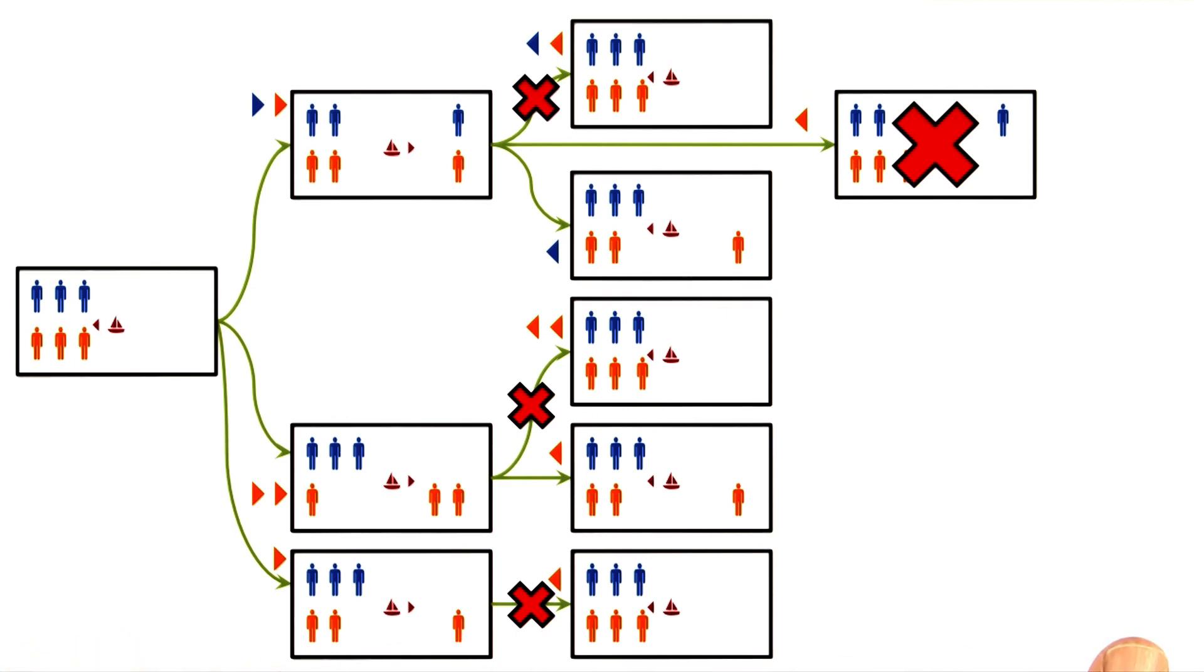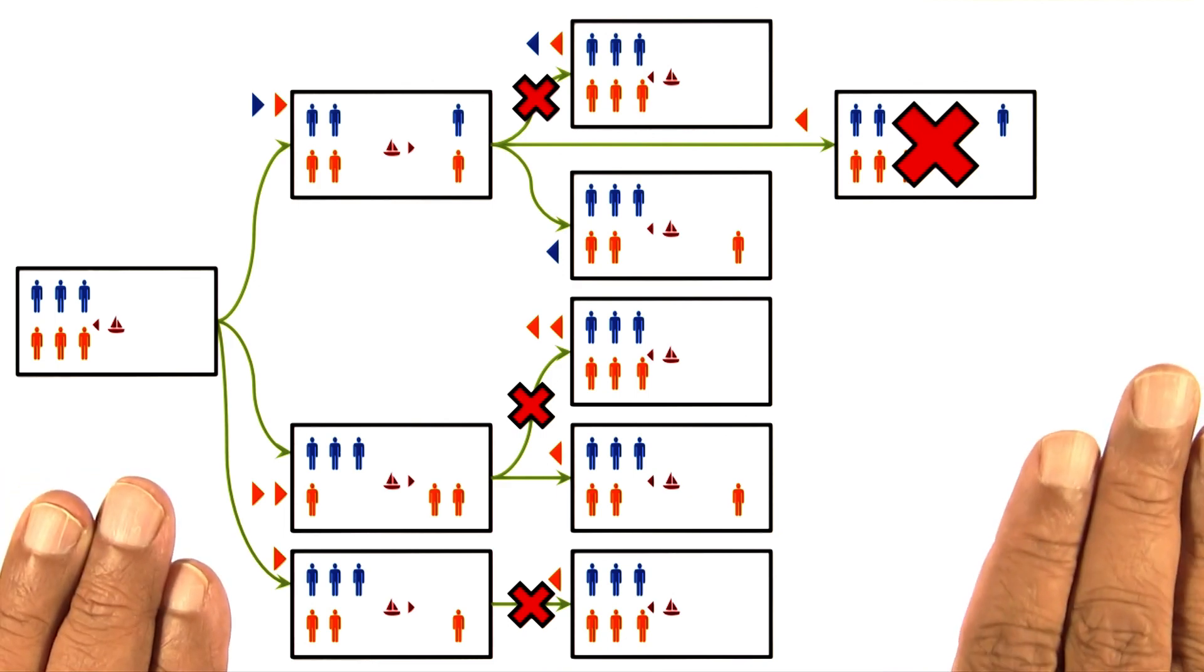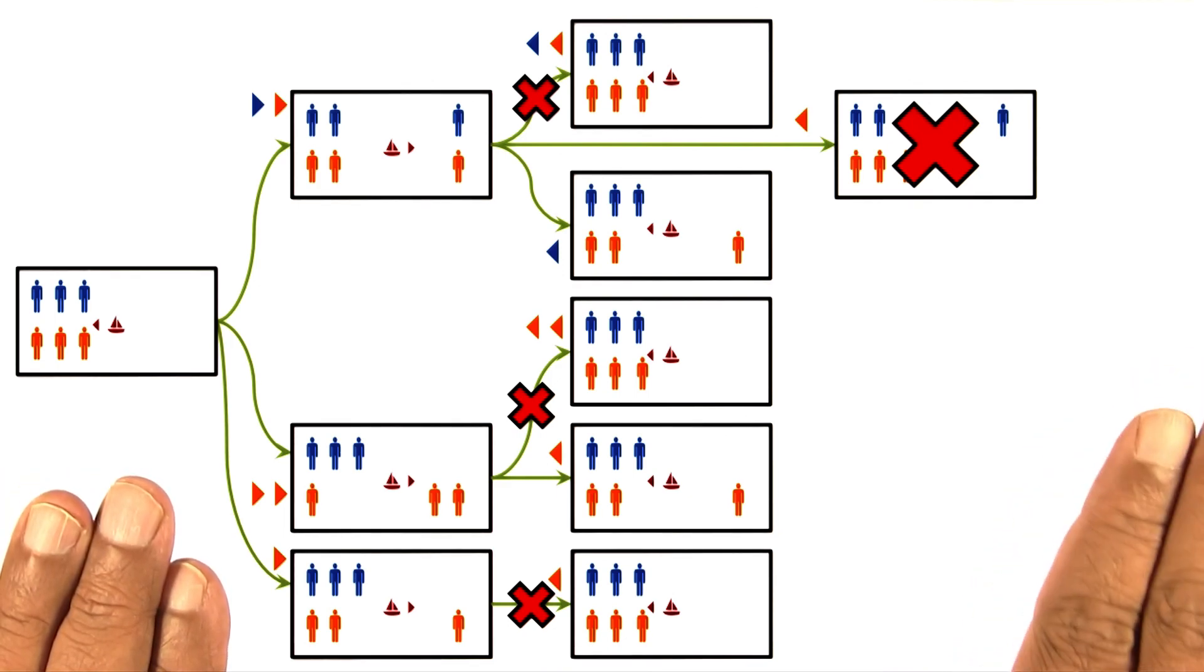For this problem, for this relatively simple and small problem, the balance of responsibility between the generator and tester might look like a trivial issue. But imagine a problem in which there were a million such states. Then whether we have the generator very smart, or the tester very smart, or both, can become an important issue.